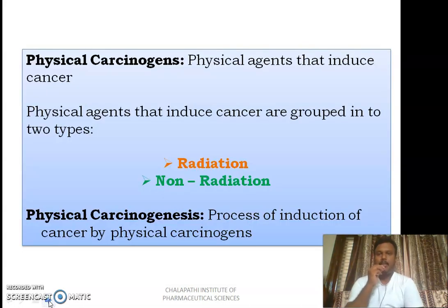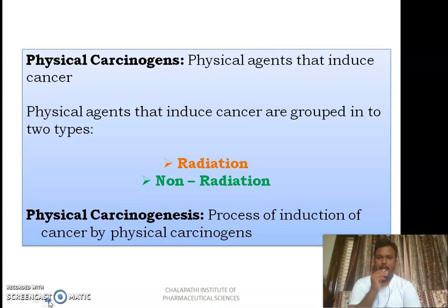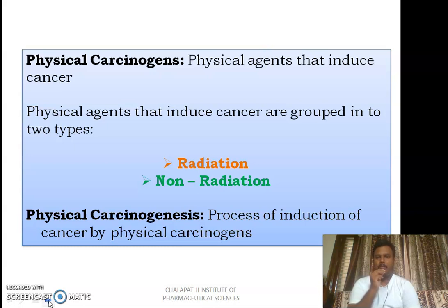Physical carcinogenesis is the process of induction of cancer by physical carcinogens. Physical carcinogens are physical agents which will induce cancer. We have two different categories of physical carcinogens: one is radiation carcinogens and the other is non-radiation carcinogens.